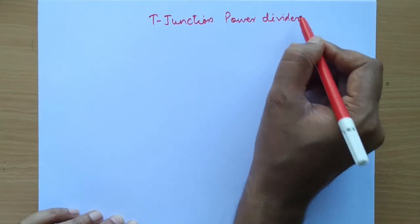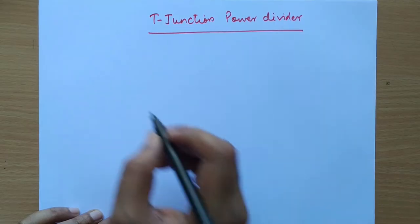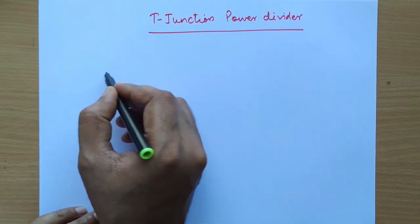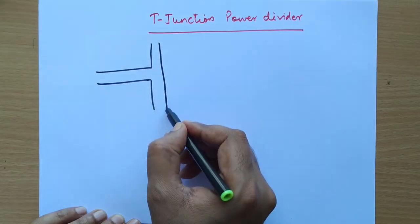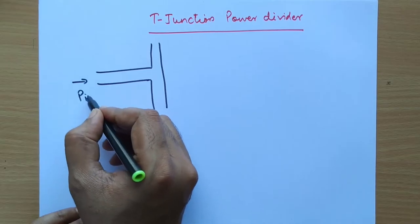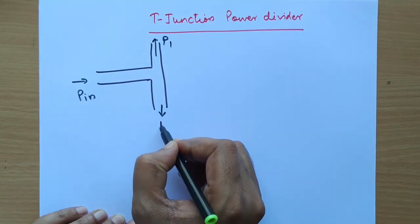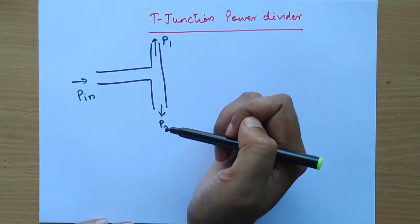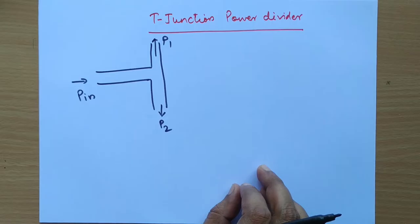As the name suggests, it's a T-junction, meaning the shape of this power divider will be something like the letter T. Power will enter as input and divide into P1 and P2 — that means power is dividing into two parts. This power divider can be made using a microstrip line or waveguide.